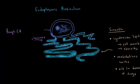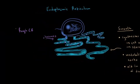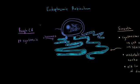Let's go to the rough endoplasmic reticulum. The rough endoplasmic reticulum has ribosomes, which means it's the site of protein synthesis. But we know that there are also ribosomes in the cytoplasm. So what's the difference between those proteins that are translated in the cytoplasm and those that are translated in the rough endoplasmic reticulum? Let's split protein synthesis into two.